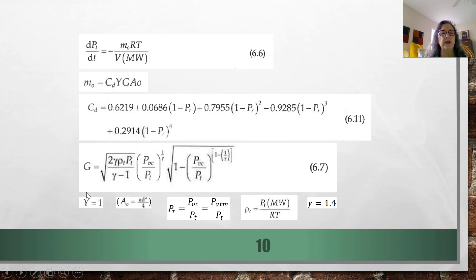Again, we used this simplification. It's not exactly right. If you want to program in the correct thing, that would be probably better. You have formulas for the density given here. This ratio is the atmospheric pressure over the tank pressure. Gamma here is 1.4.